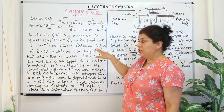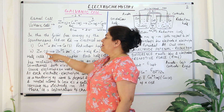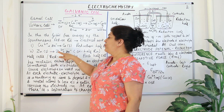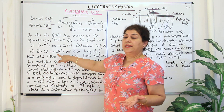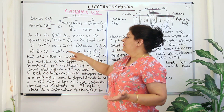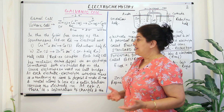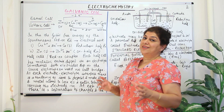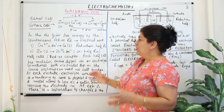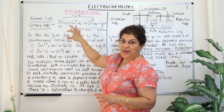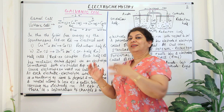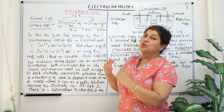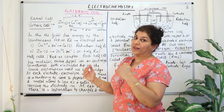This is the reduction half reaction. Zinc loses two electrons, turns into the zinc ion, and the two electrons which are given out mean that zinc gets oxidized. Therefore, this half of the reaction is the oxidation half. So one reactant is getting oxidized and the other is getting reduced — we divide the reaction into two halves: the oxidation half and the reduction half.